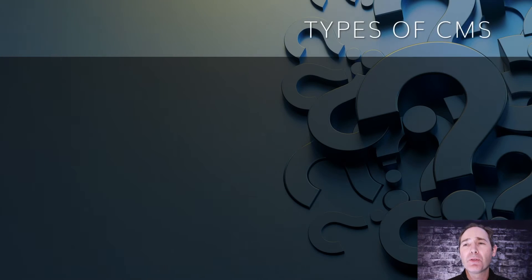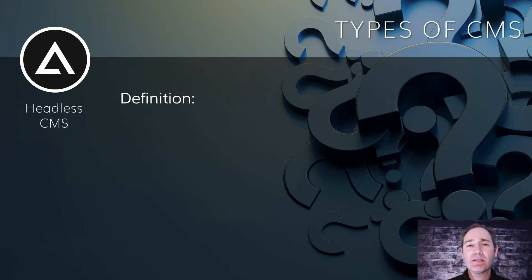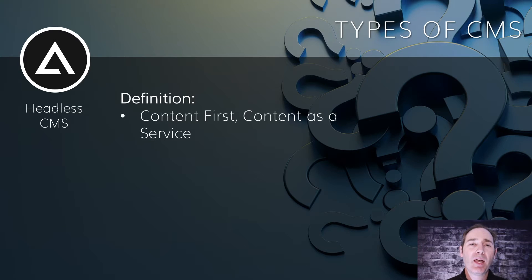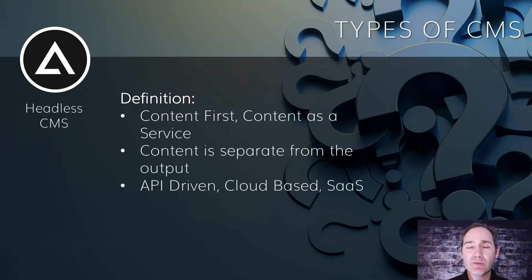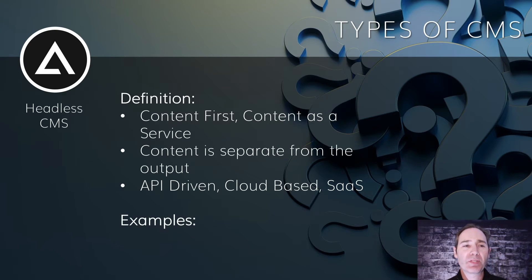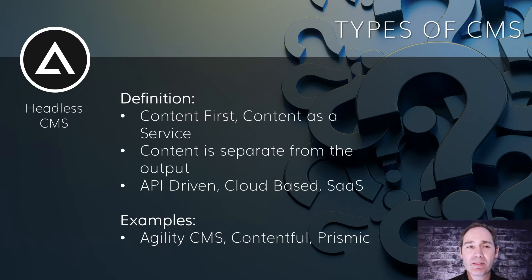Now let's look at the third category. Headless CMS is the most recent type of CMS to start dominating the marketplace, and we would define this as content-first or content as a service — any system where the content is separate from the output. It tends to be API-driven, almost always cloud-based, and it's SaaS, meaning software as a service, so you pay a fee as opposed to doing an install. Some examples include Agility CMS, Contentful, and Prismic, just to name a few.